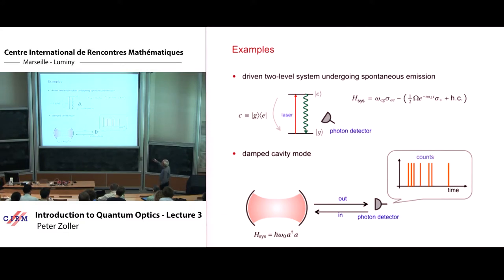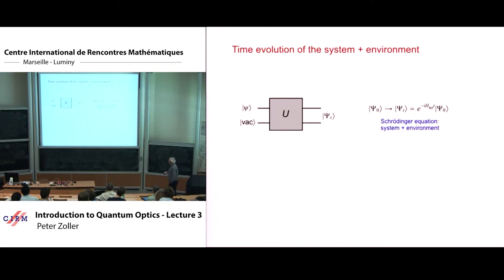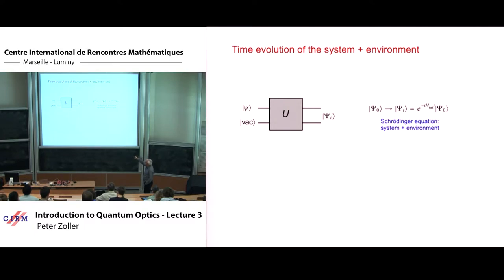Let's go back to the picture of time evolution of system plus environment. We have here the time evolution operator for our quantum optical system. We have the input state — say the atom in the ground state and the vacuum state. When we propagate for a certain time, what comes out is the entangled state Ψ(T) of system plus environment. Our goal: either calculate the reduced density matrix by tracing over the bath, obtaining the master equation, or make a measurement, deriving quantum jumps and quantum trajectories.